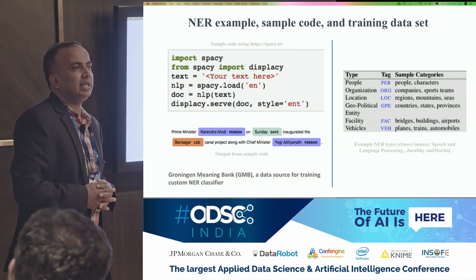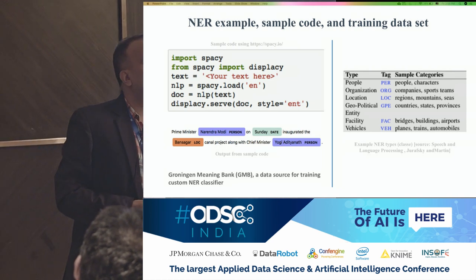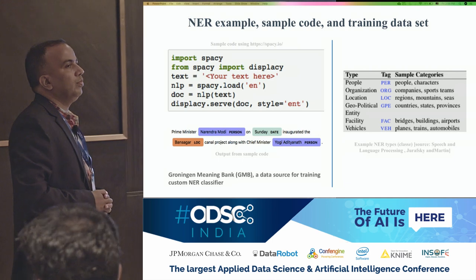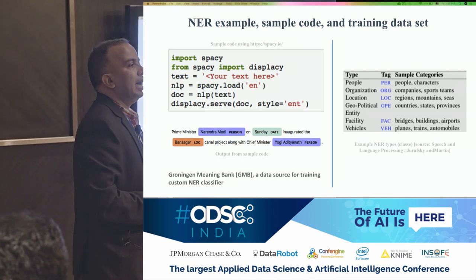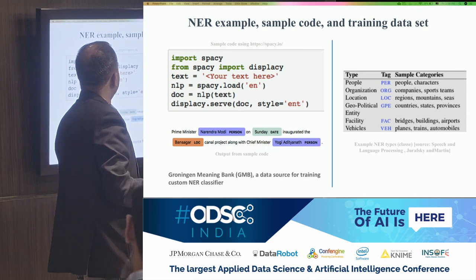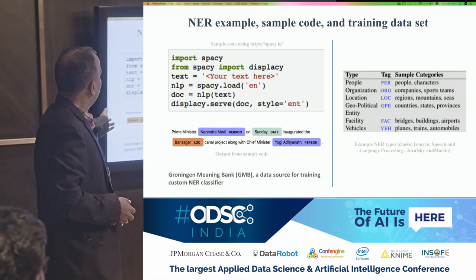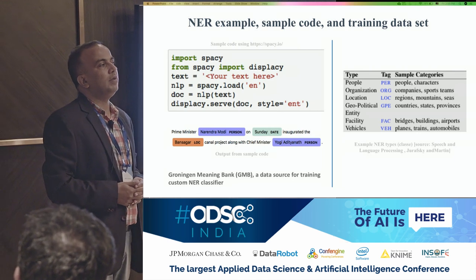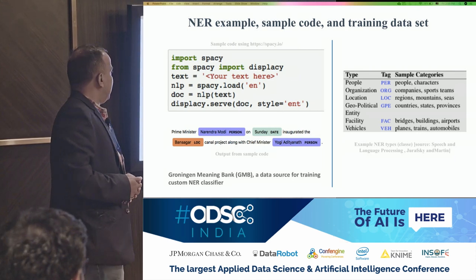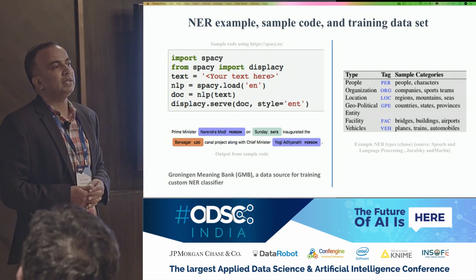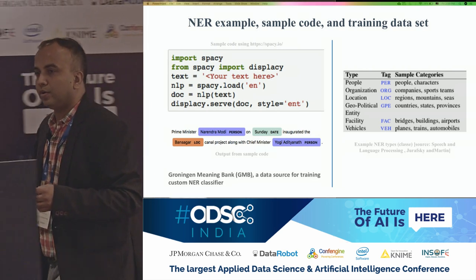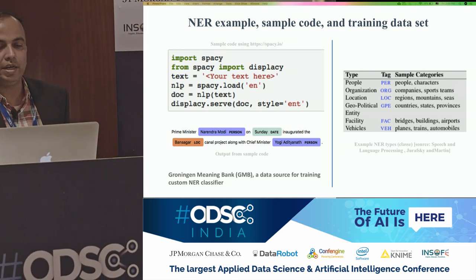Still, if you have a specific need for your organization and want to develop your own custom NER classifier, you can use existing knowledge bases like the Groningen Meaning Bank, which is a data source already available with labeled data that you can use for building a supervised machine learning based NER classifier. That's about named entity recognition, which is used to identify entities.